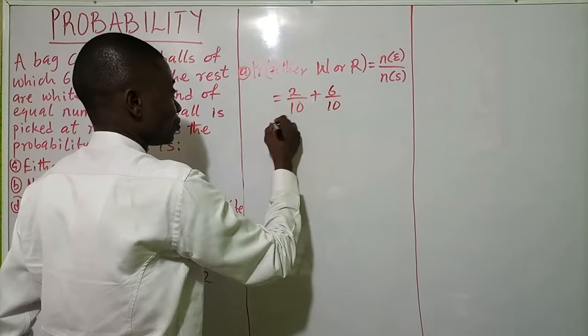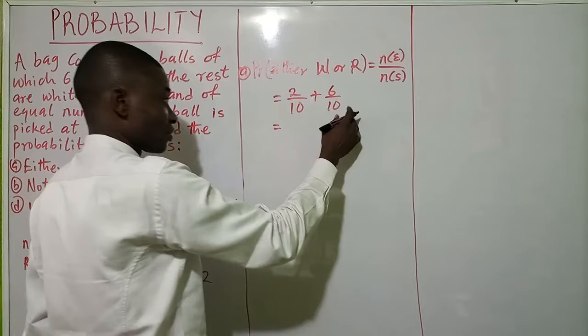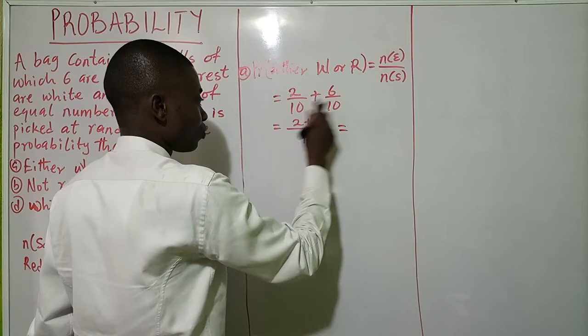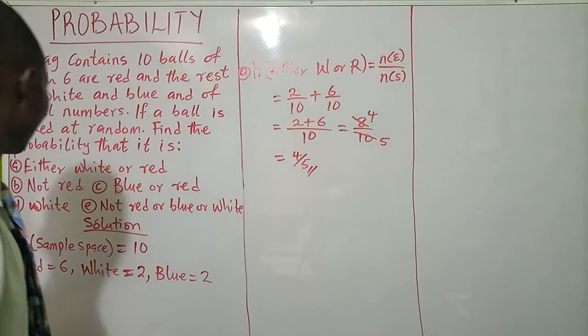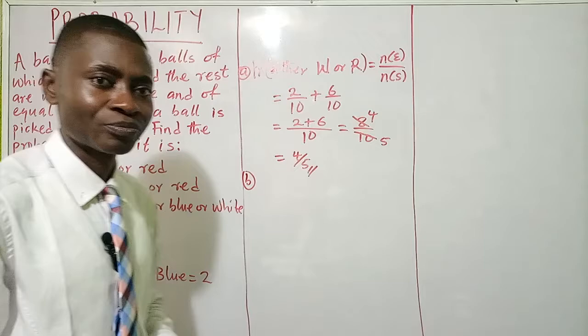Two plus six is eight over ten. We can reduce: eight over ten simplifies to four over five. So the probability of getting either white or red is four over five.